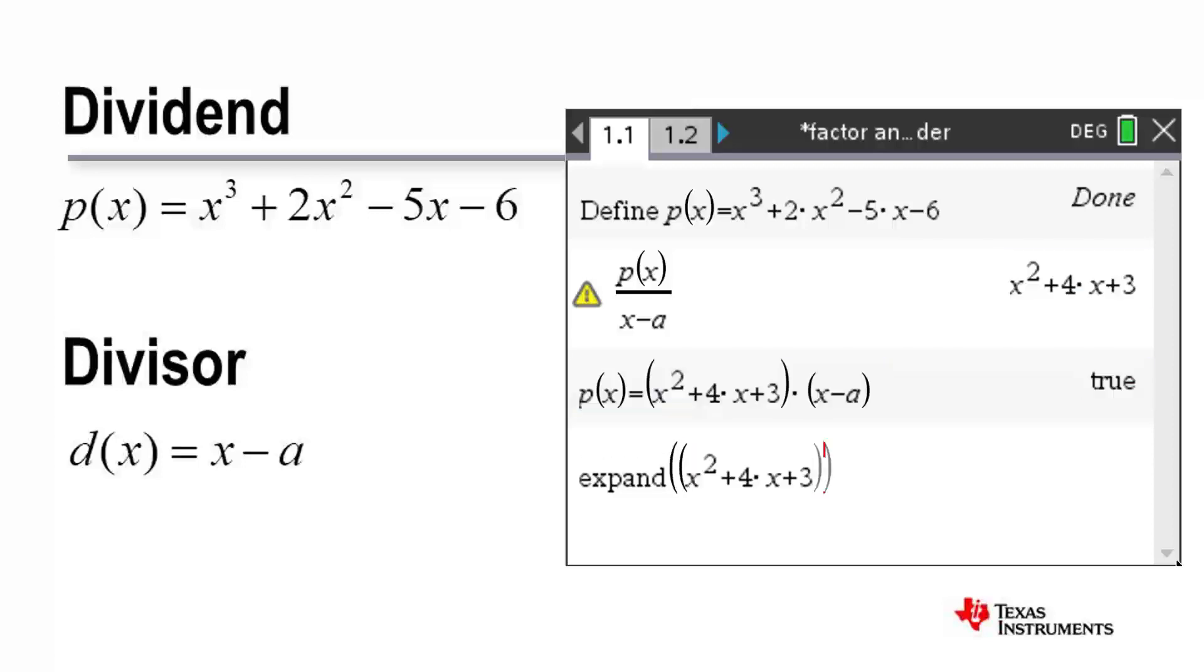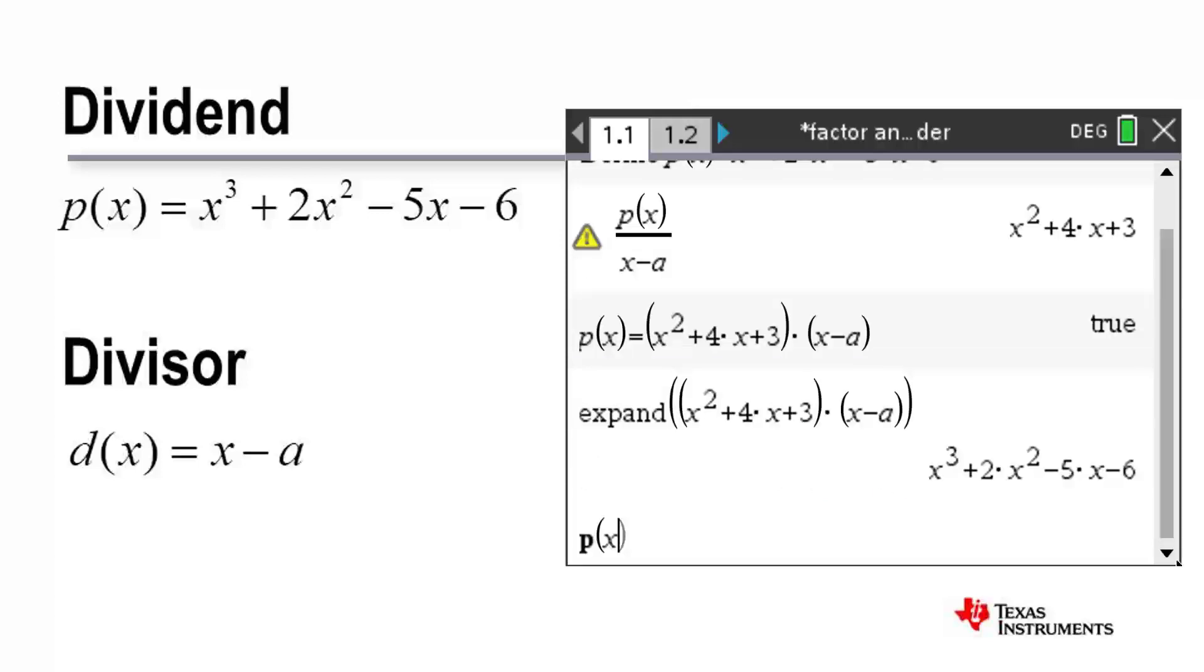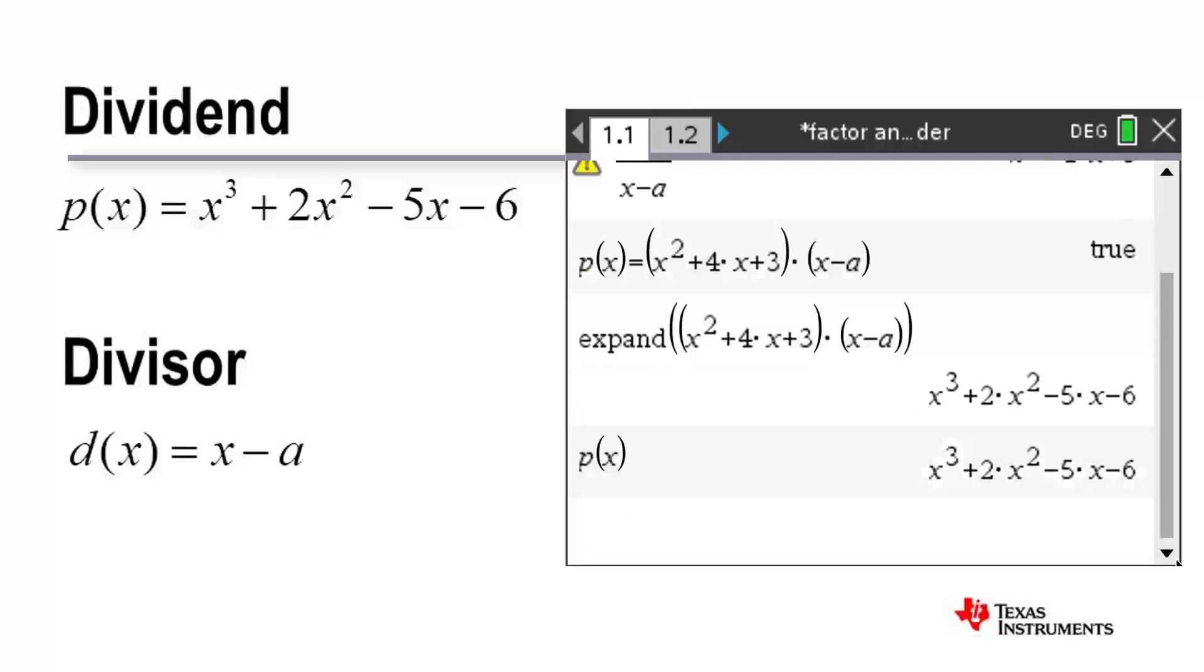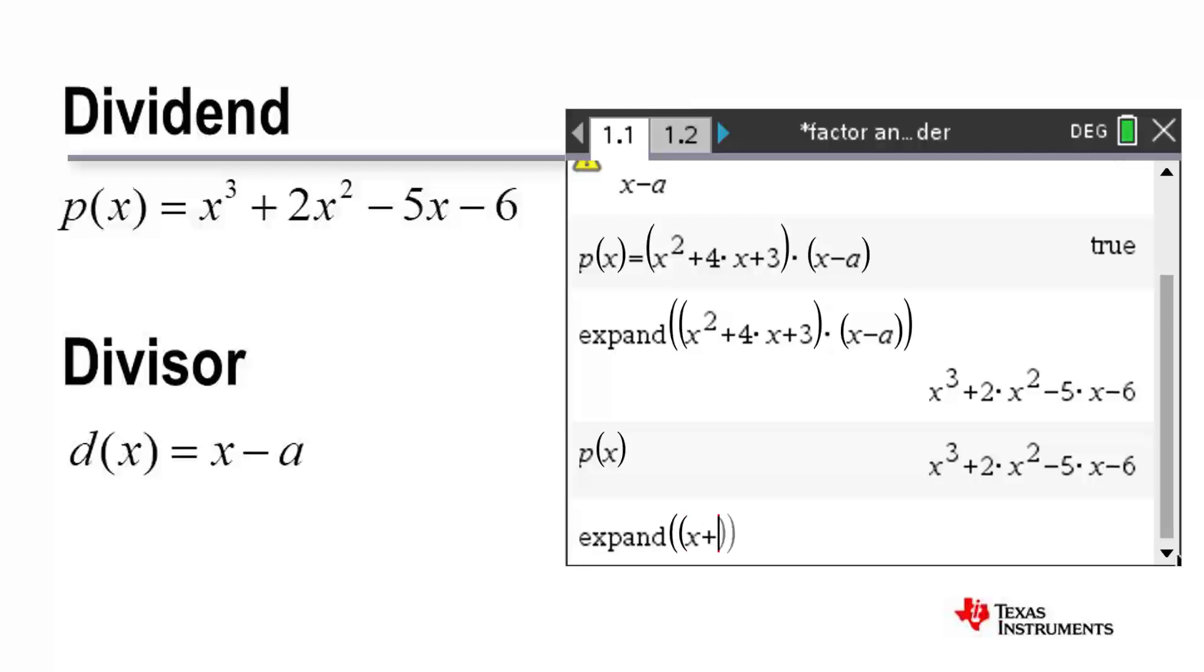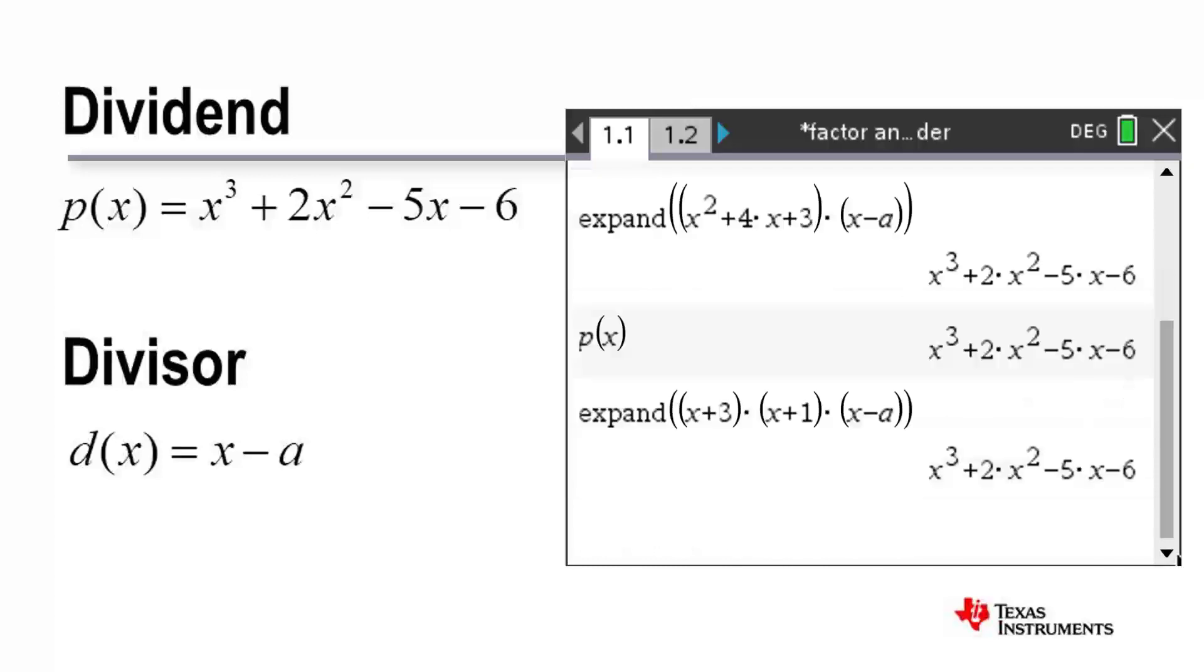And, just like in our numerical example, where 6 could be reduced further, so too can the quadratic in this case. And the final result is that we can express our cubic function as the product of 3 linear factors, a bit like our 42 represented as the product of 3 prime factors.